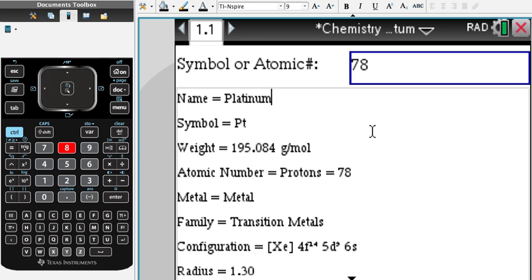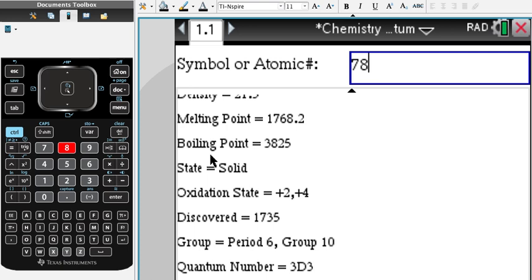You have symbol, weight, everything: when it was discovered, its date, its melting point, quantum number, group. It's all right here.